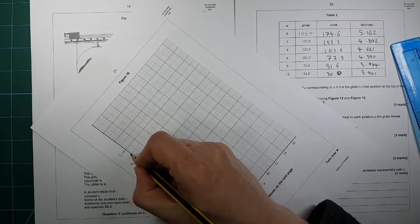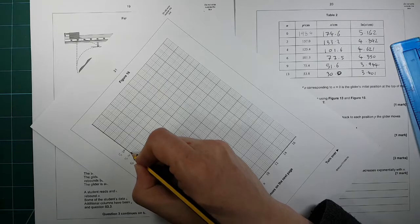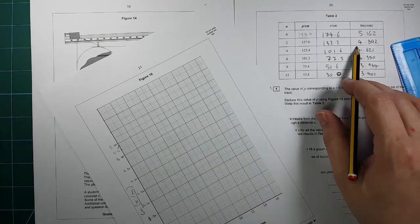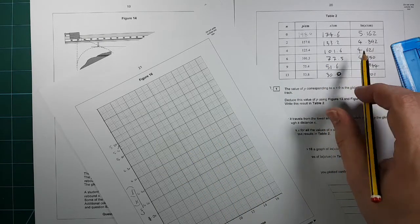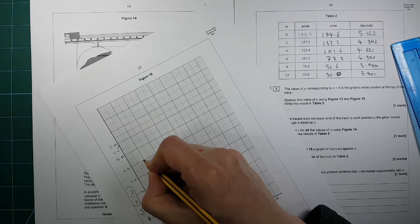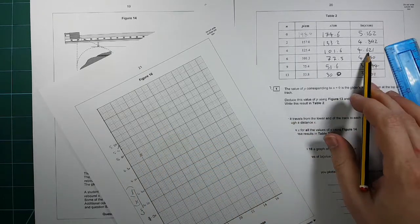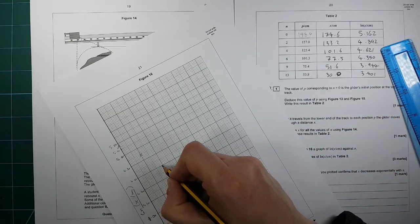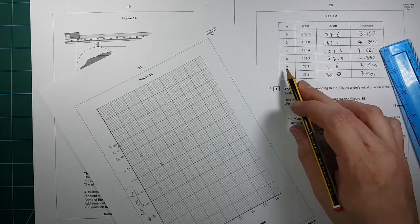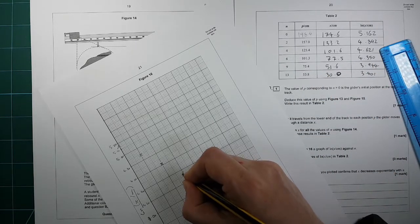So there is 5.10, so there is our first point, this one here. This one is 4.89, and it's at 2, so 4.89 is half a box below that. Then we've got 4.62, so there's 4.6, there's 4.62, one box above it. So next one is 4.35, it's halfway between the two.